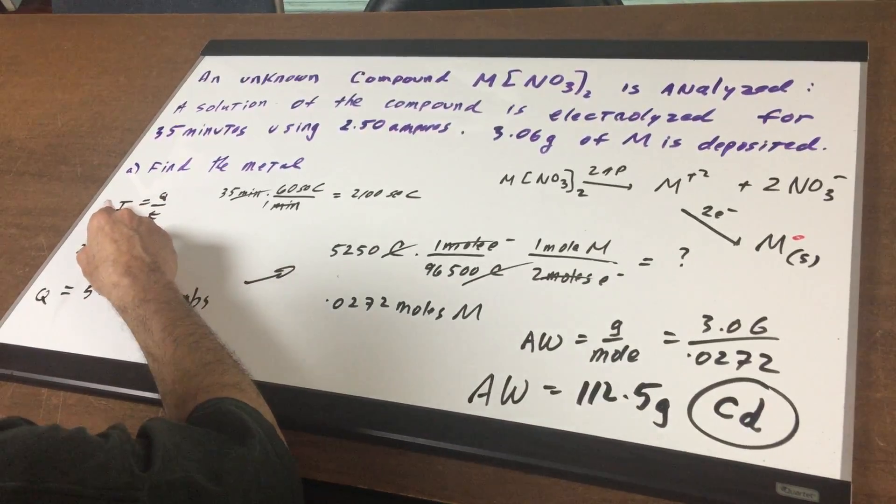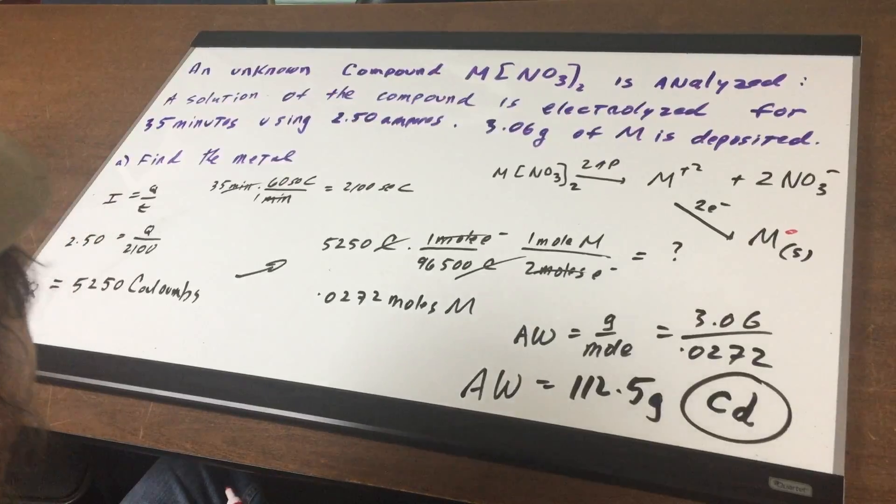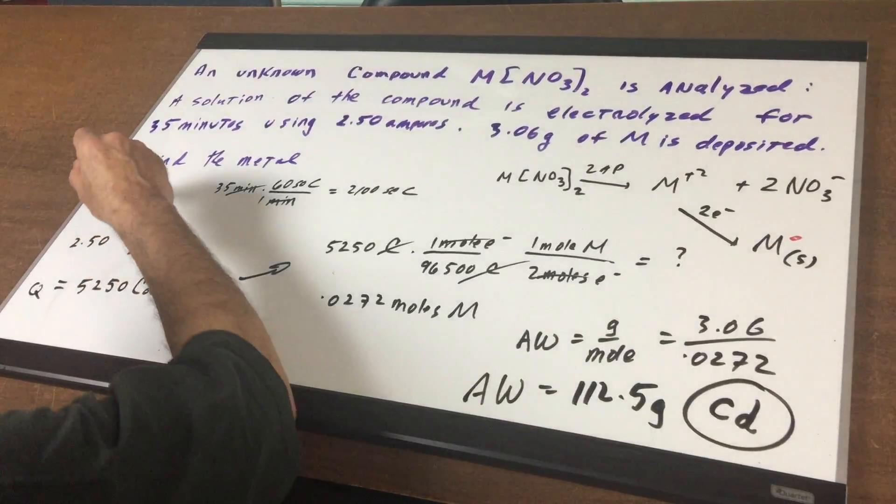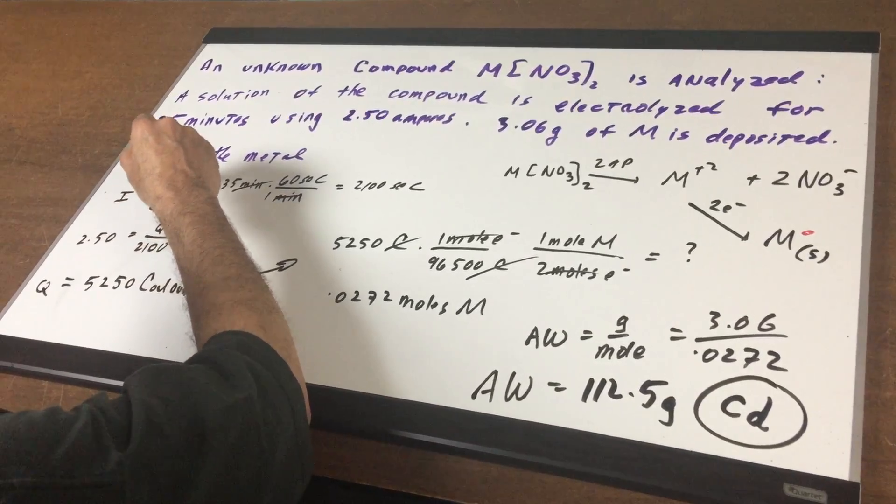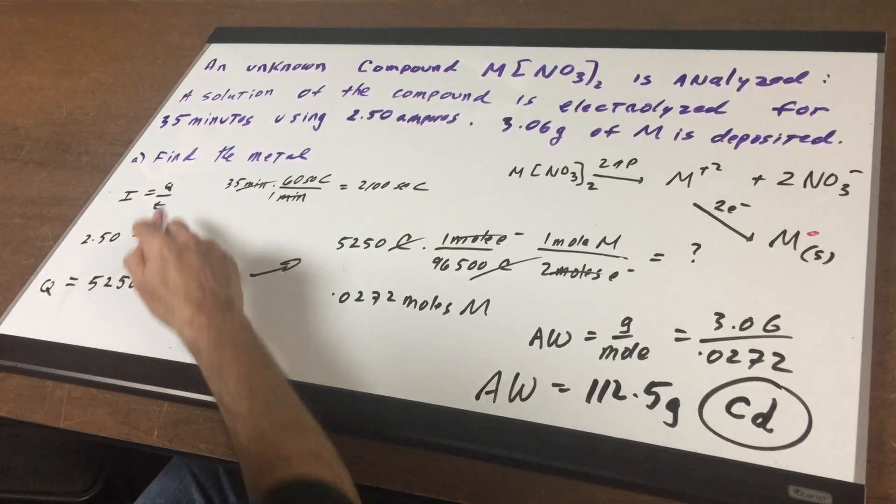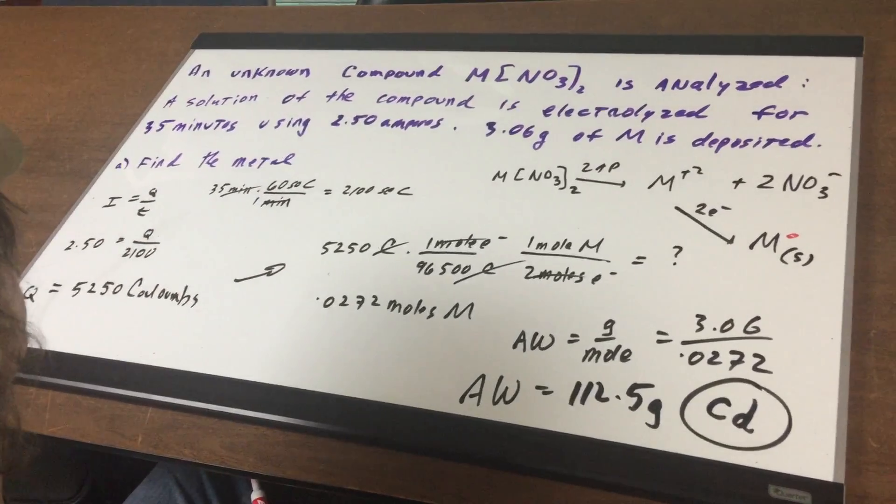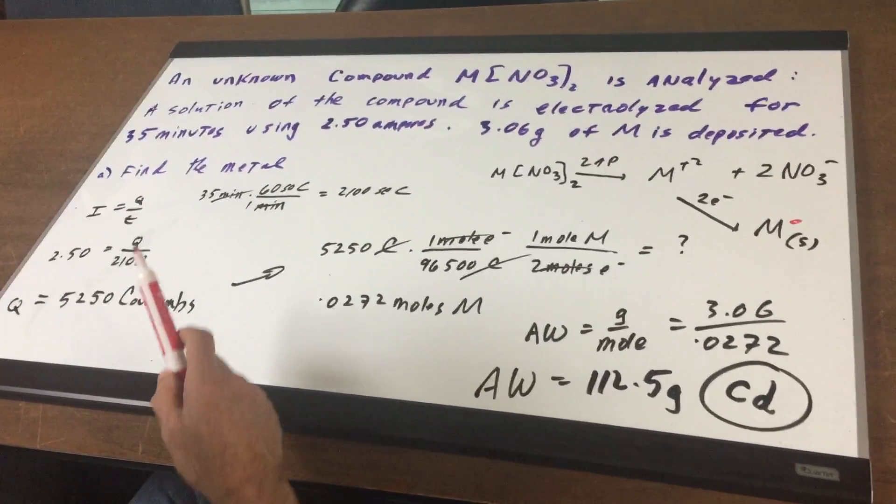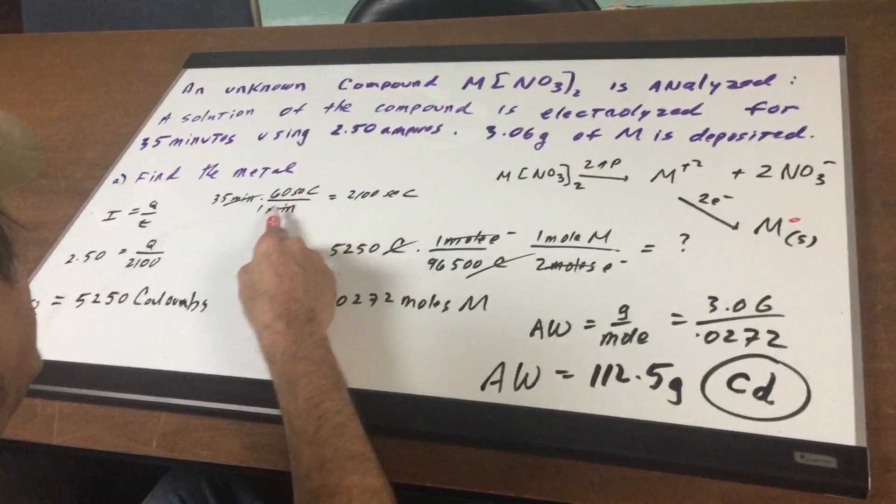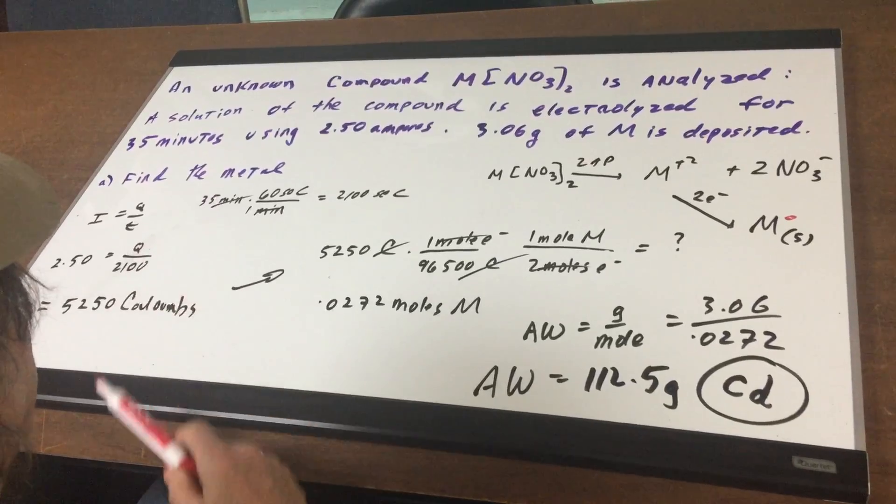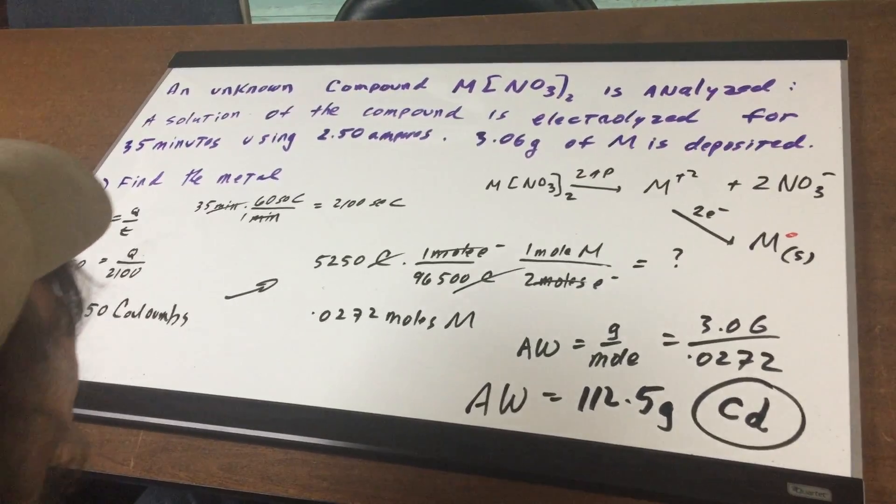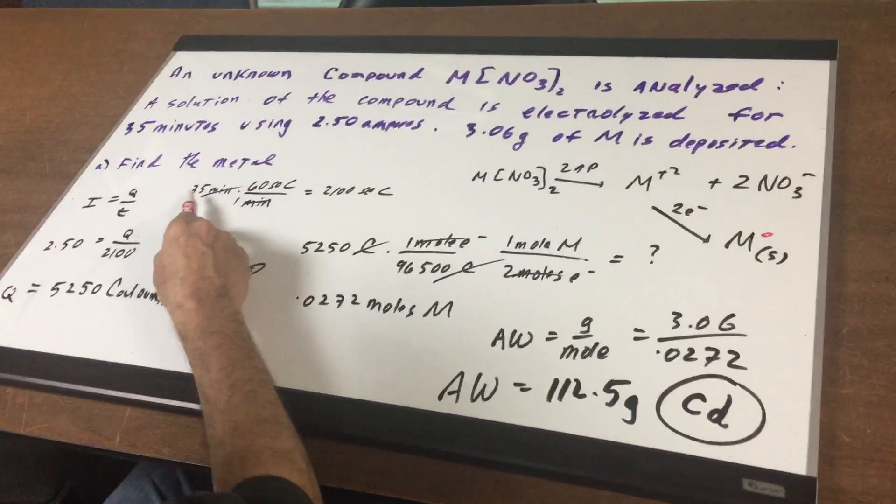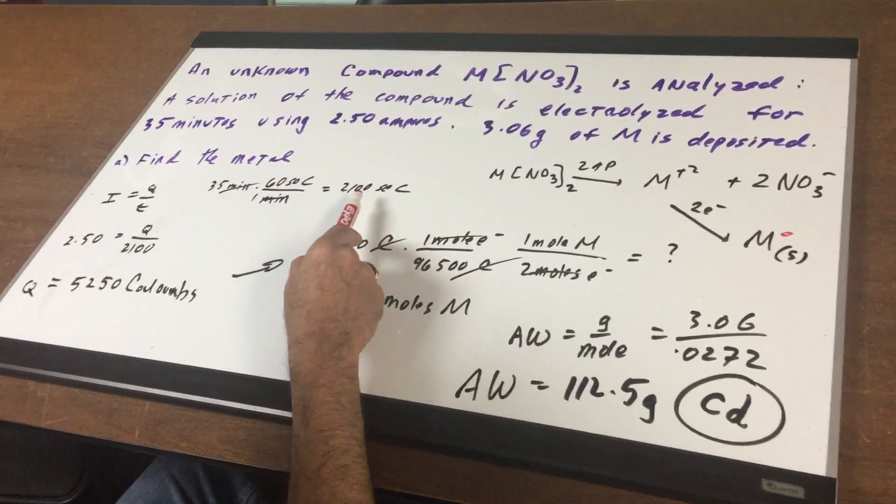Now the first thing I do is when I hear the word amps I write the formula I equals Q over T. I is for amps, Q is the charge in coulombs and time is in seconds. What I first did is I converted minutes into seconds. On the DAT the numbers will be much nicer. You just make sure you understand the concept.